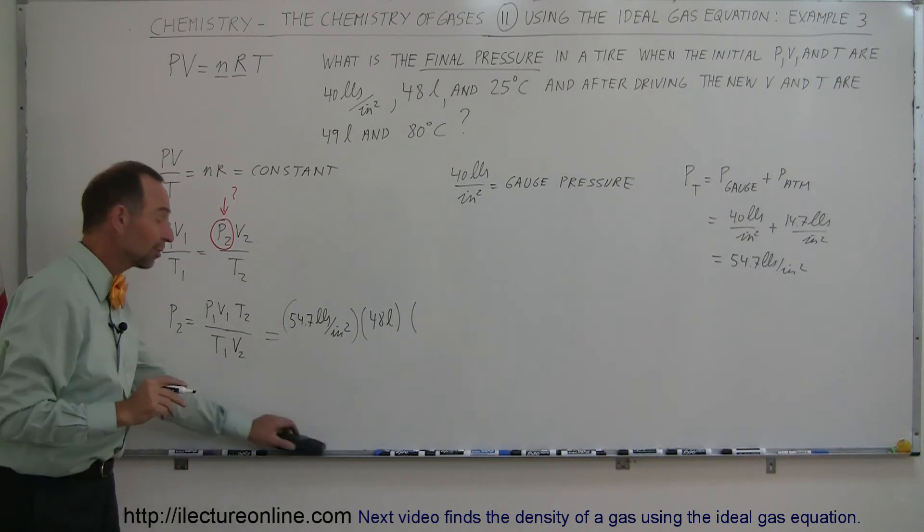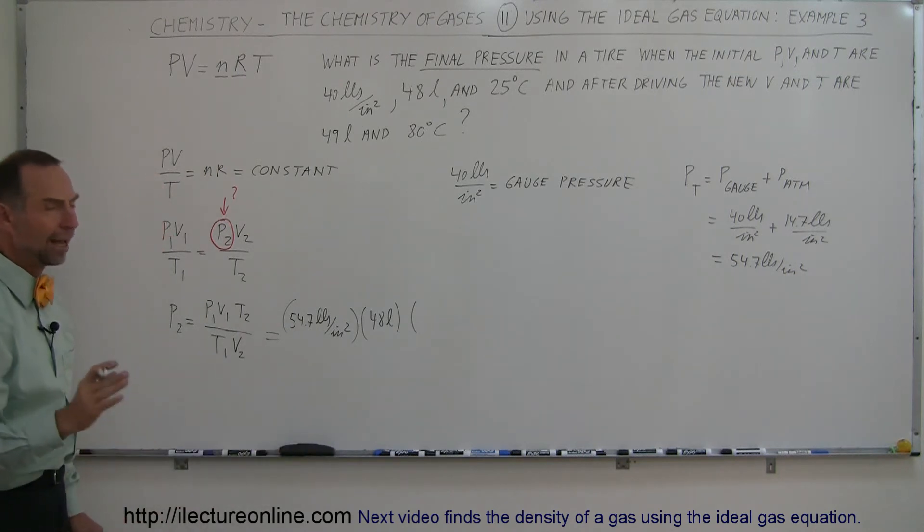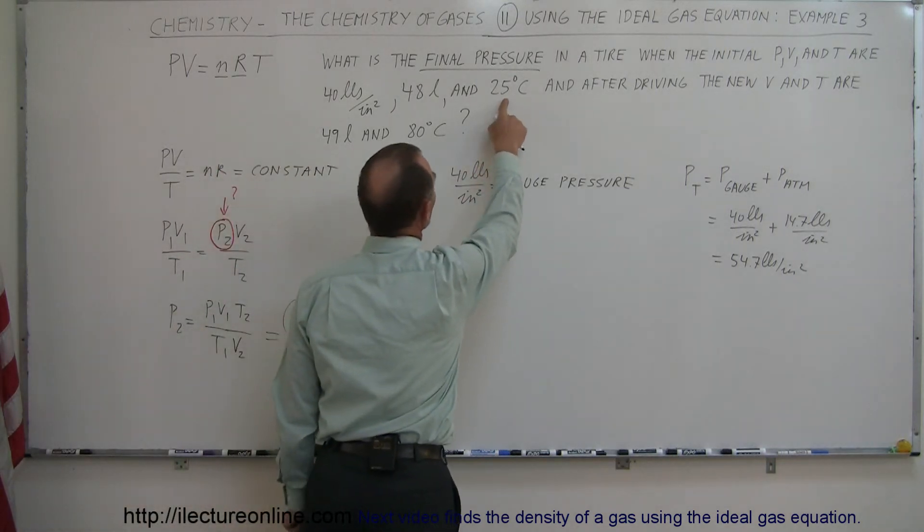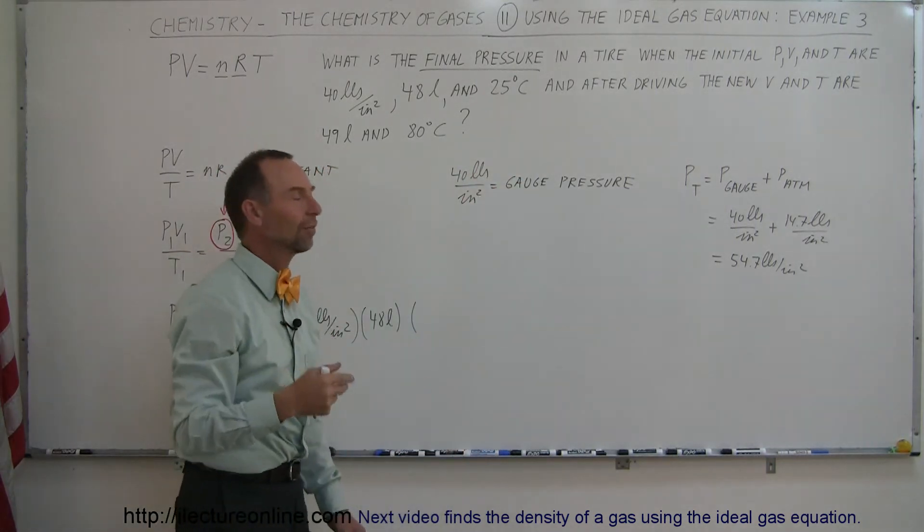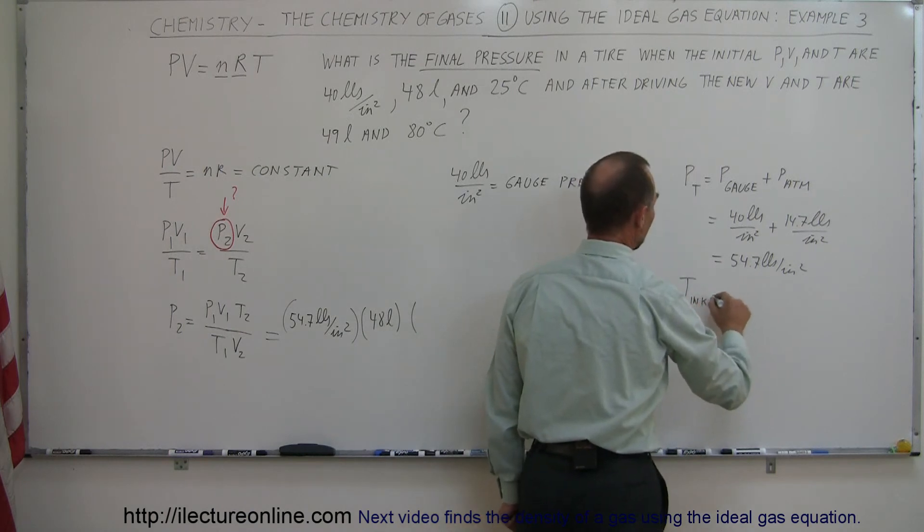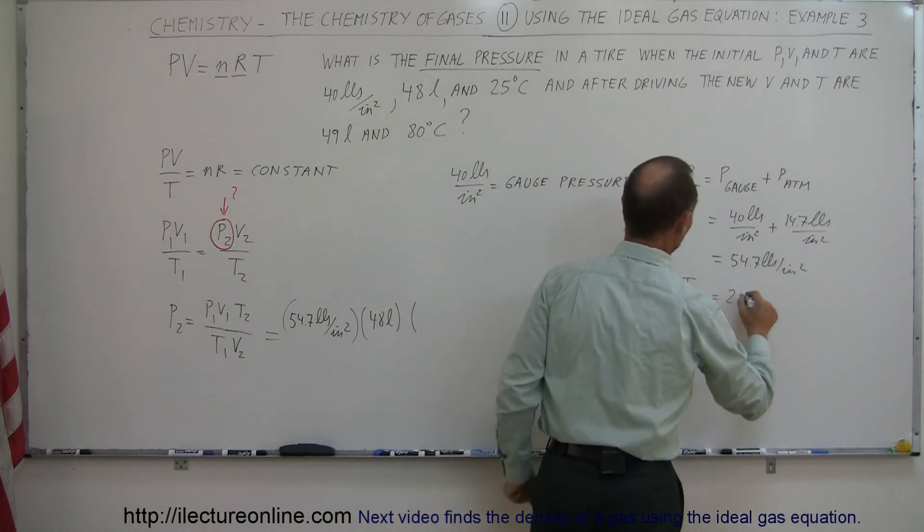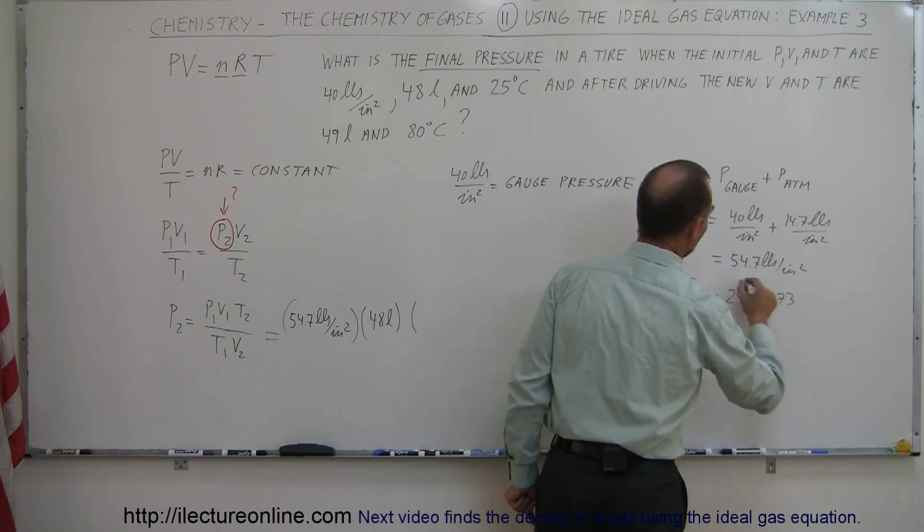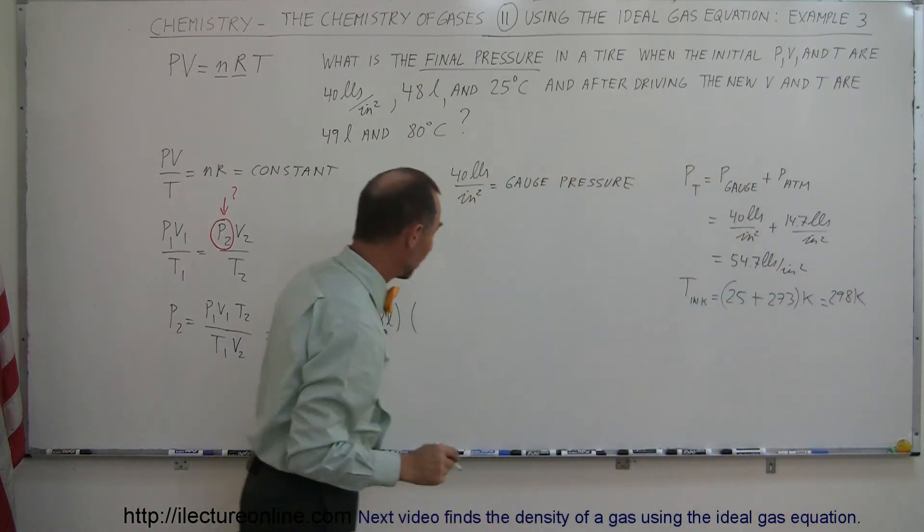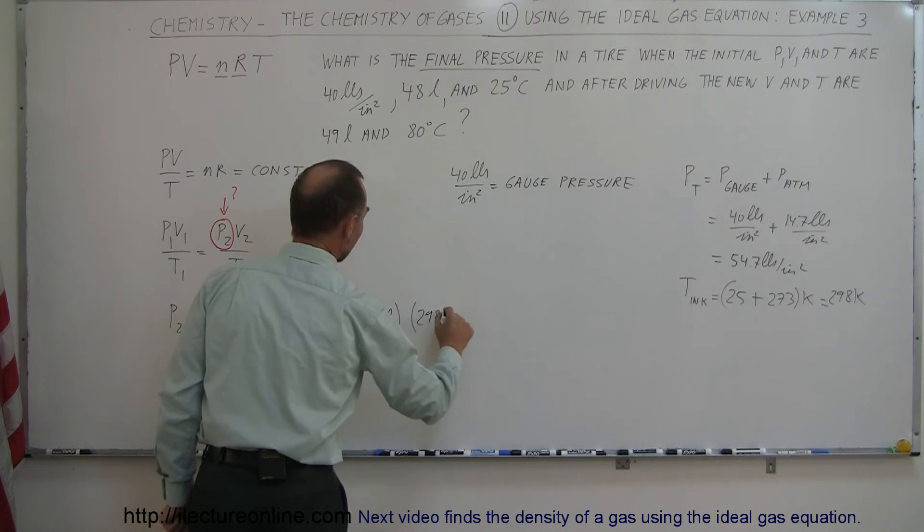And now we have temperature. When it comes to the ideal gas equation, we always have to convert, and I mean always have to convert temperature to the total temperature in Kelvin. So we were given the initial temperature as 25 degrees centigrade, add that to 273, so temperature in Kelvin is equal to 25 plus 273, and that would be 298 Kelvin. So that's the initial temperature in Kelvin, we put down 298 Kelvin.